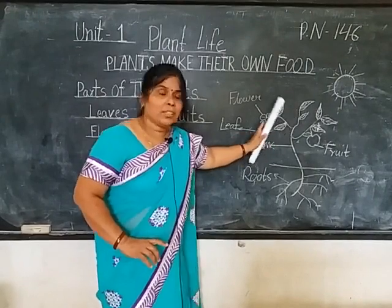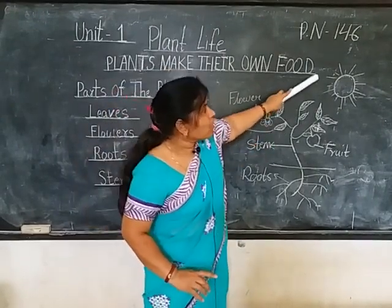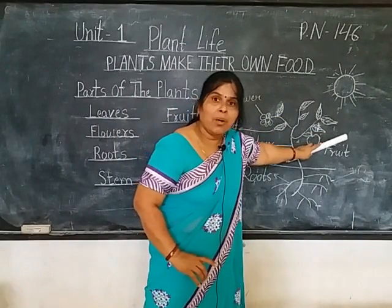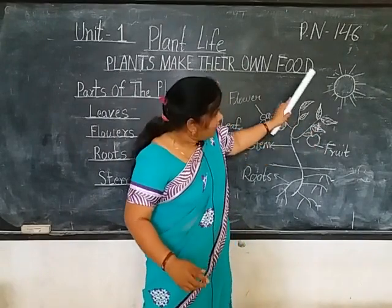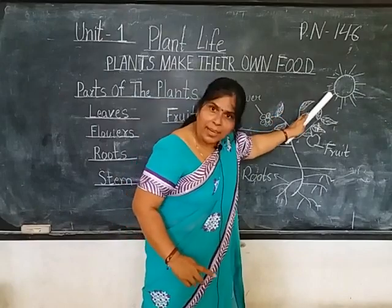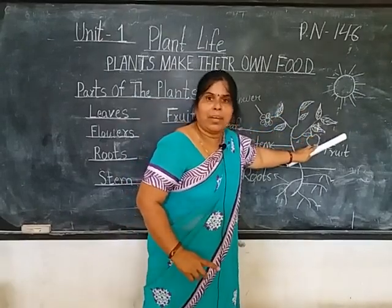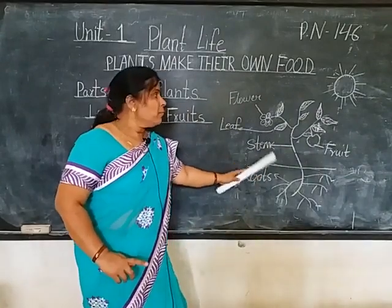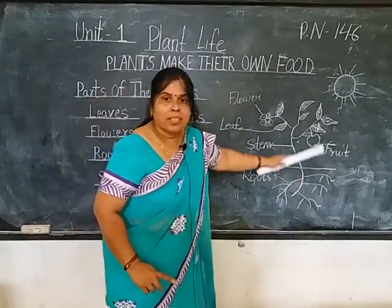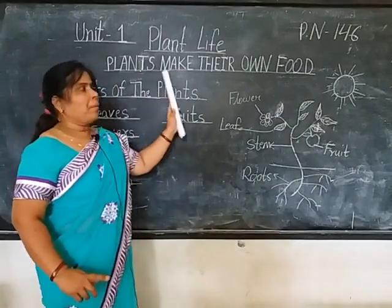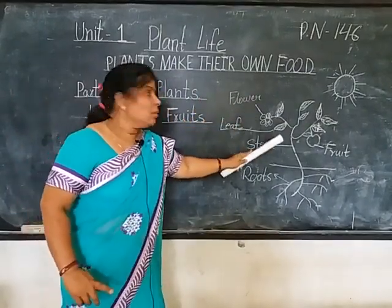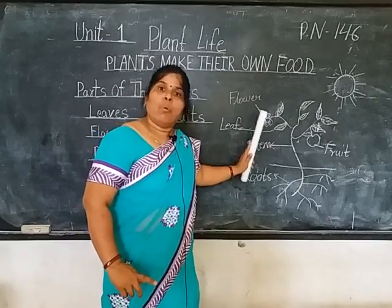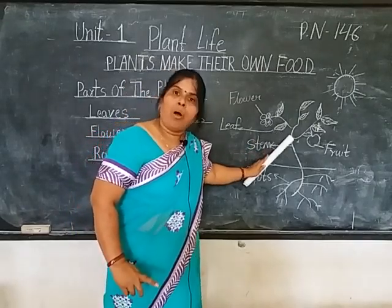Now here, the leaf's function: leaves, in the presence of sunlight and carbon dioxide from the atmosphere, make their own food. This is the process of plants making their own food, and we call the leaf the food factory of the plant.